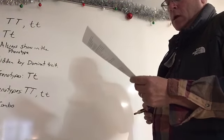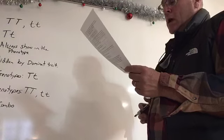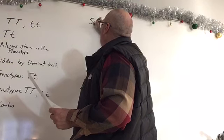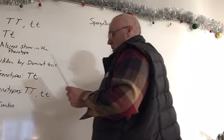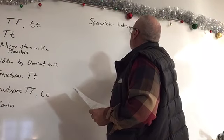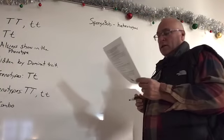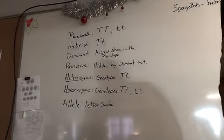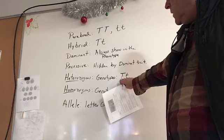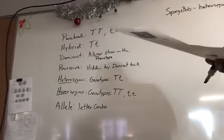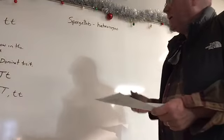Let's do number four. SpongeBob SquarePants recently met Sponge Suzy RoundPants at a dance. SpongeBob is heterozygous for his square shape. If we go back to our vocabulary, heterozygous means different — a capital letter and a lowercase letter. They're using the letter S for shape.